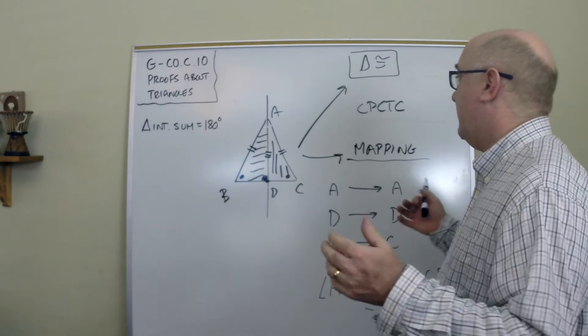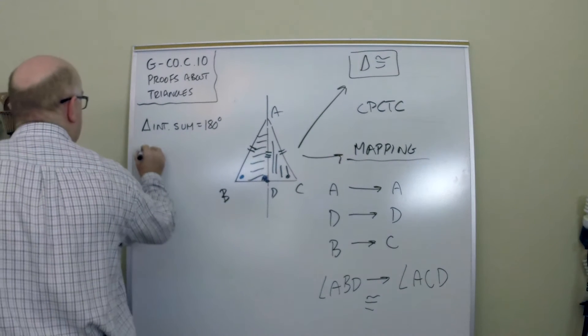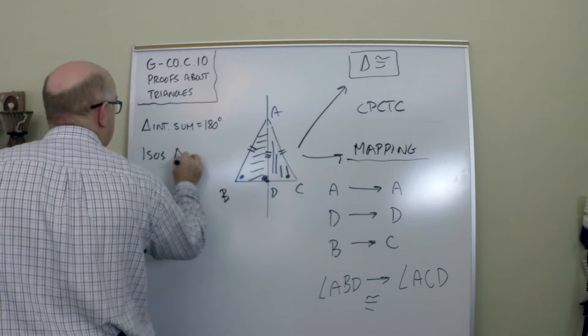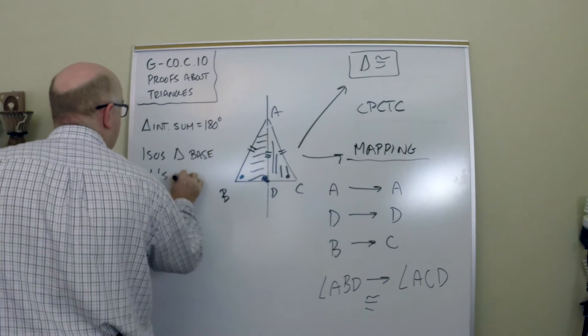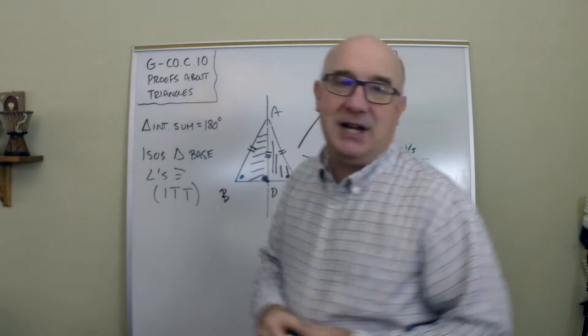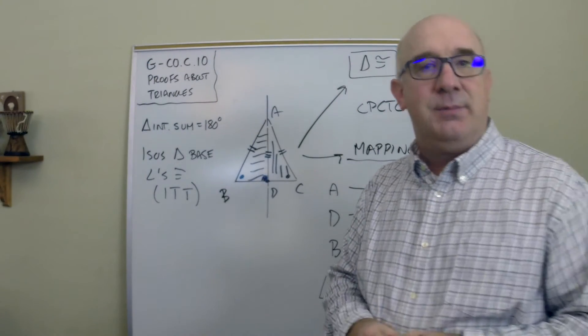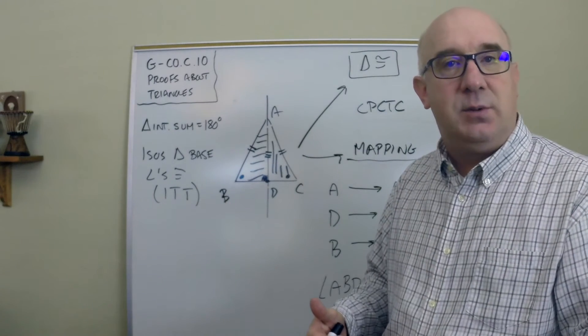So, this establishes that in an isosceles triangle, base angles are congruent. This is sometimes called ITT, the isosceles triangle theorem. And it says if you have an isosceles triangle, you get base angles that are equal.